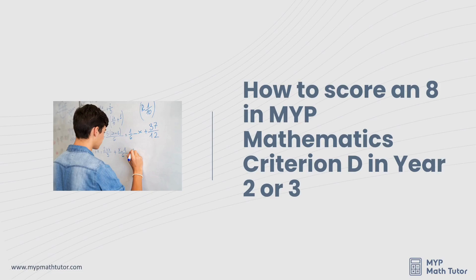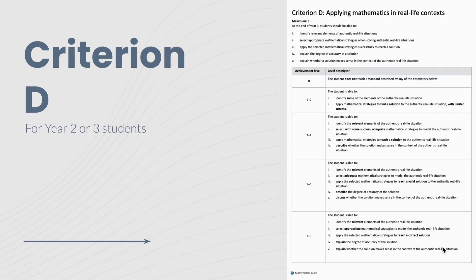Here are some tips on scoring a 7 or 8 on your next Criterion D investigation or assignment. Here's the rubric for the MYP Mathematics years 2 and 3.